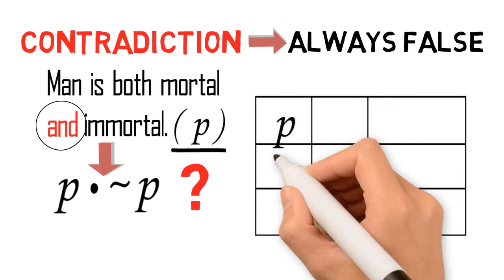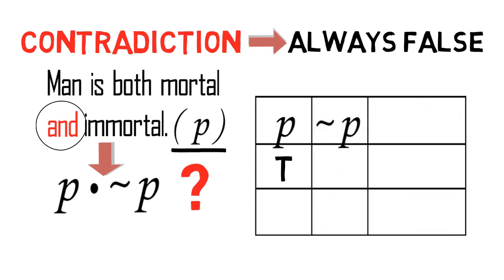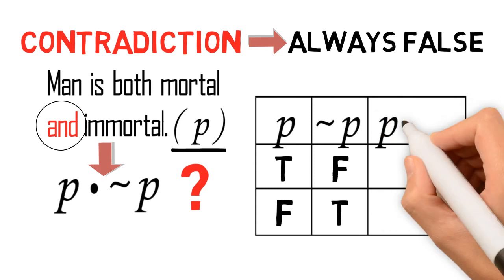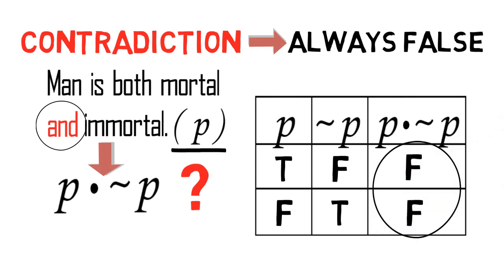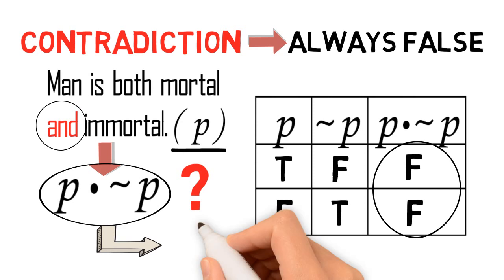If P is true, then not P is false. And if P is false, then not P is true. Applying the rule of conjunction, which says that a conjunction is true if and only if both conjuncts are true, then surely there is no way that the proposition 'man is both mortal and immortal,' or P and not P, will become true. Indeed, the propositional form P and not P is always false.